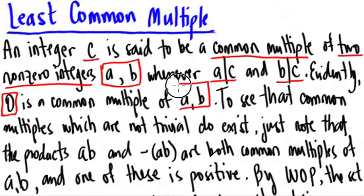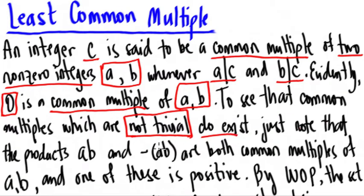That's a trivial multiple of a and b. We can see that the least common multiple of all pairs of numbers is zero, but that's very trivial. To see that common multiples which are not trivial do exist, just note that the products ab and negative ab are both common multiples of a and b.